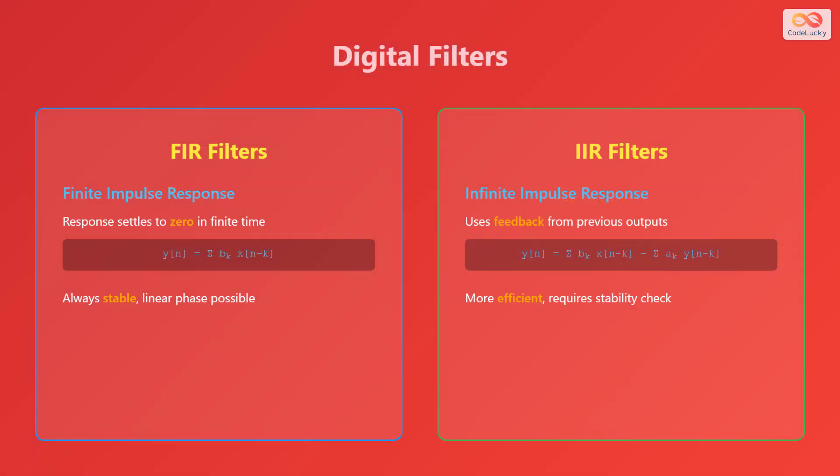Digital filters are essential for signal processing and come in two primary types: finite impulse response (FIR) filters and infinite impulse response (IIR) filters. FIR filters have a response that settles to zero in finite time, with output y(n) = Σ b_k × x(n−k). They are always stable and linear phase is possible. IIR filters use feedback from previous outputs, with equation y(n) = Σ b_k × x(n−k) − Σ a_k × y(n−k). They are more efficient but require stability checks.